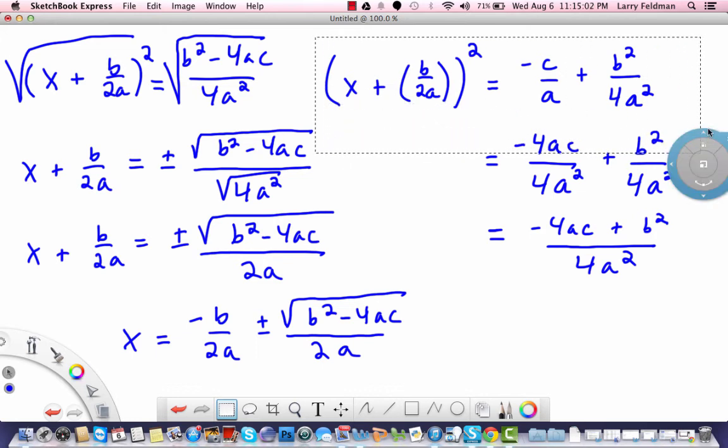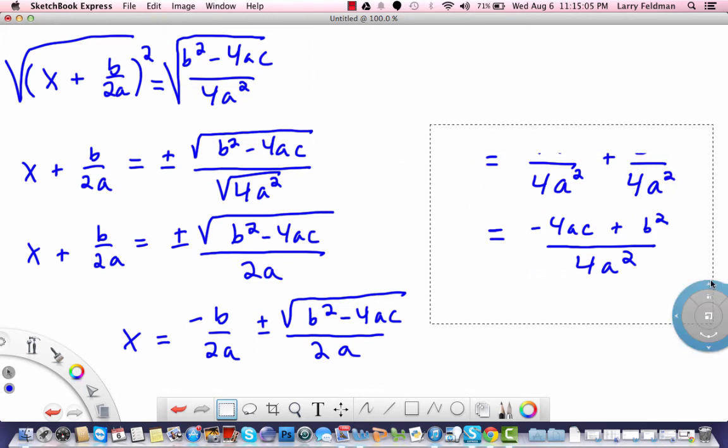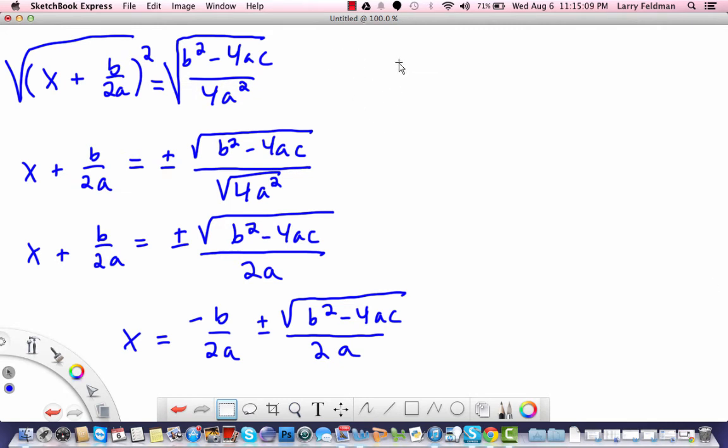I'm just going to make a little bit more room, and we just need to clean this up a little bit more. As you can see, we have a common denominator—we have 2a and 2a—so this becomes opposite of b plus or minus the square root of b squared minus 4ac all over 2a. And this is the quadratic formula. So let's just do a quick example. Let's say we have x squared minus x minus 6 equals 0.